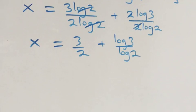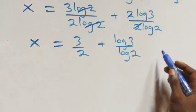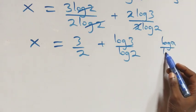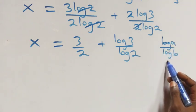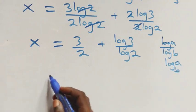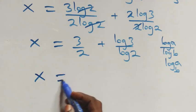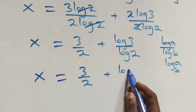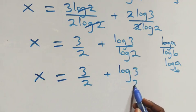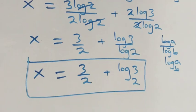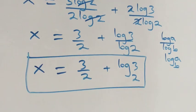Next, we apply the change of base formula, where log a over log b is the same thing as log a to base b. What we have becomes x equals to three over two plus log three to base two. So here we have the value of x in this given problem as three over two plus log three to base two. Now let's check if this satisfies the given problem.